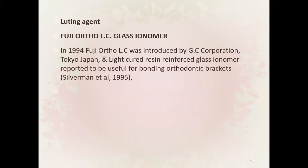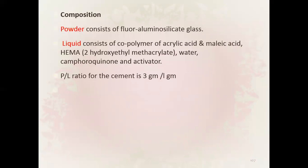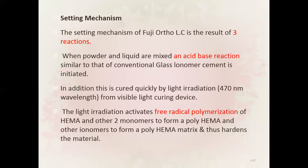GIC as luting agent: Fuji Ortho LC. In 1994, Fuji Ortho LC was introduced by GC Corporation, Tokyo, Japan — a light cure resin reinforced glass ionomer reported to be useful for bonding orthodontic brackets. Composition: powder consists of fluoro alumino silicate glass; liquid consists of co-polymer of polyacrylic and maleic acid, HEMA, water, camphorquinone, and activator. Powder-liquid ratio is 3:1.